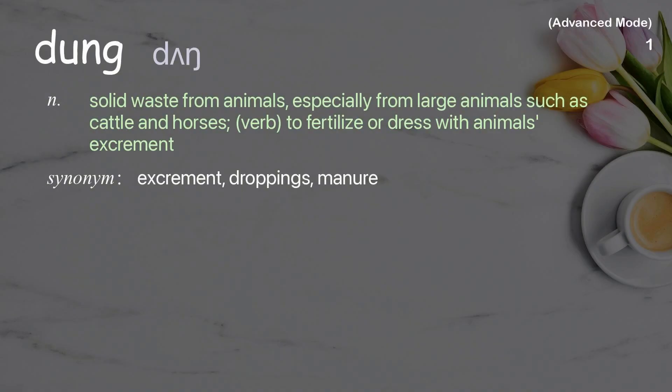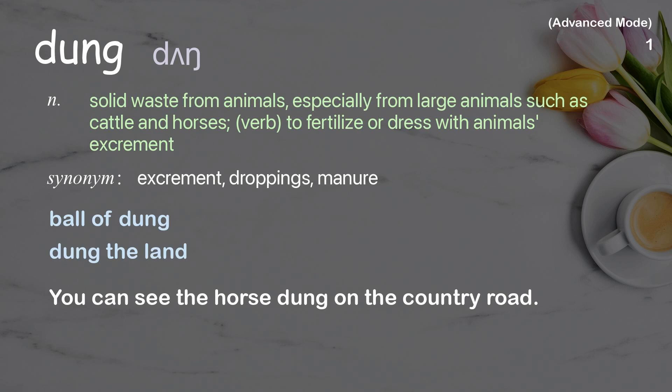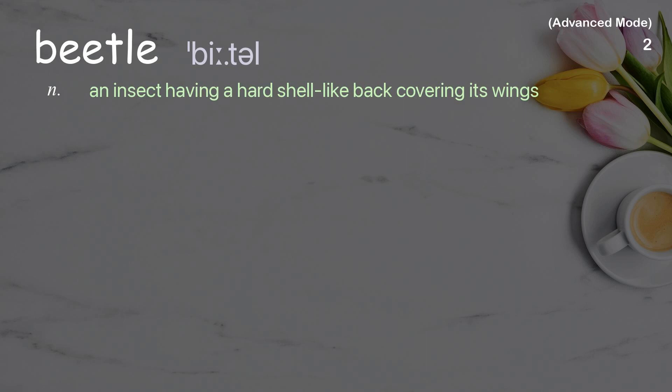Dung: solid waste from animals, especially from large animals such as cattle and horses. Verb: to fertilize or dress with animals' excrement. Examples: ball of dung, dung the land. You can see the horse dung on the country road.